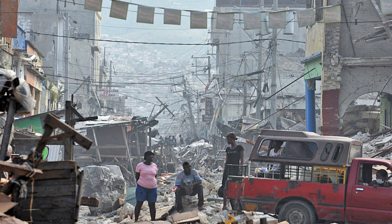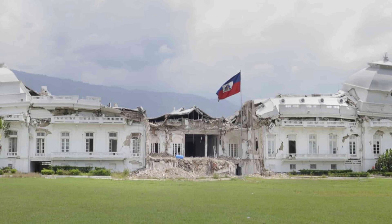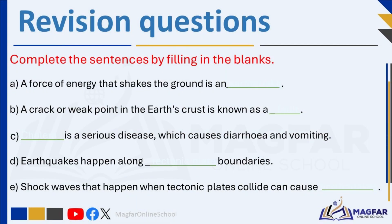The earthquake in Haiti showed how vital it is to make communities stronger and more prepared for disasters. This means making buildings and roads stronger, having better emergency plans, and ensuring development is done sustainably. It also showed that countries need to work together to help each other when disasters happen and to help communities recover afterwards.